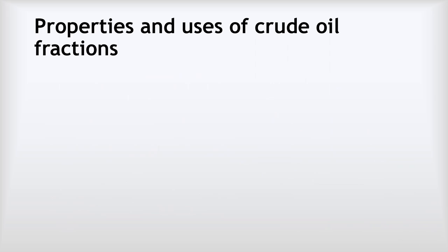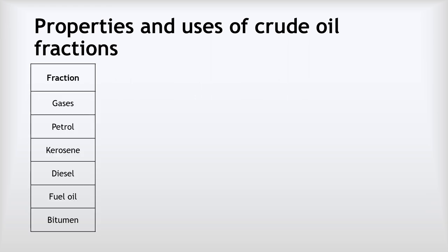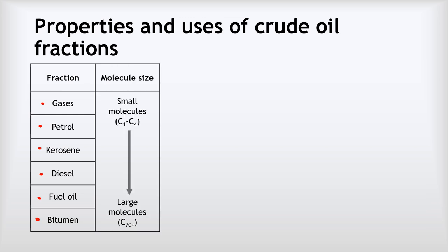What about the properties and uses of the different fractions of crude oil? The first thing we need to know for each one is its name. Starting with the gases at the top, then in order: petrol, kerosene, diesel, fuel oil, and finally bitumen — you do need to know those names in that order. The first property is to do with the size of the molecules these things are made from. The gases have the smallest molecules, then petrol is a bit larger, then kerosene bigger still, then diesel, then fuel oil, and bitumen is made of the very largest molecules.